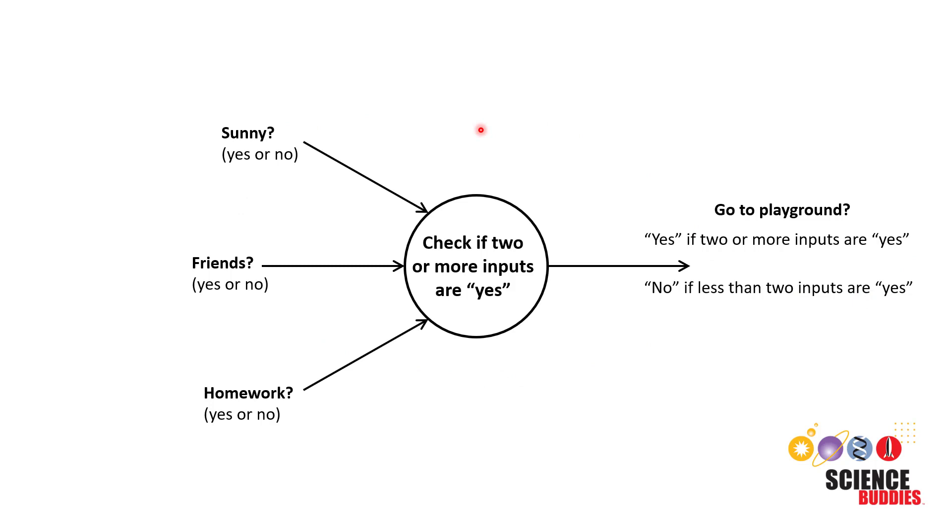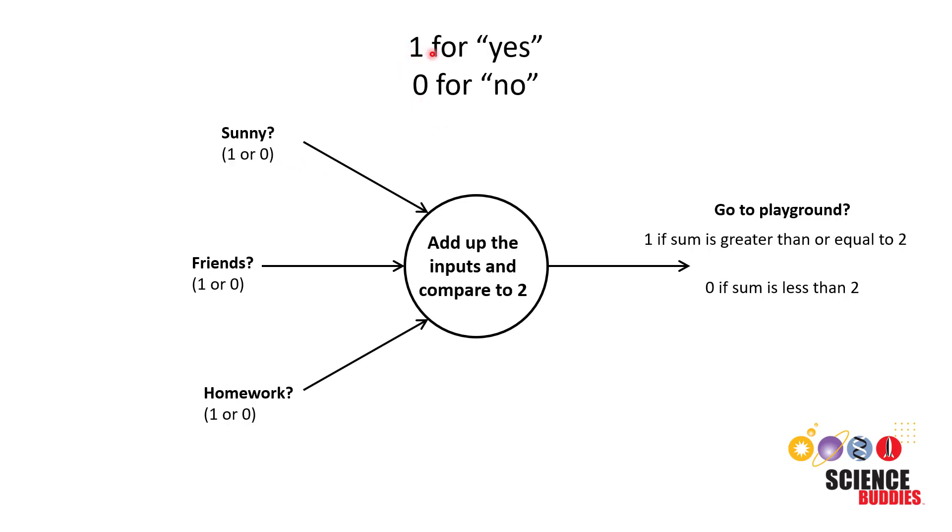If we wanted a computer to do this for us, we could switch to using ones and zeros instead of yeses and nos because computers use ones and zeros. For example, we could represent yes with a one and no with a zero. Now instead of yes or no, we would check if each of our inputs is one or zero. We would then add up the inputs and compare to the number two. If the sum is greater than or equal to two, then our output would be one for yes we should go to the playground.